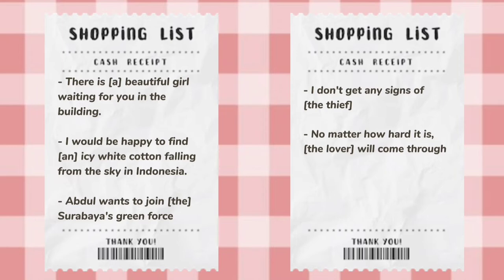Pembicara sudah tahu makna masing-masing pada frasa ini, seperti beautiful girl. Pembicara bisa saja mendeskripsikan beautiful girl dengan suatu nama, tapi alih-alih menyebut nama, si pembicara menggunakan ekspresi 'beautiful girl'. Selanjutnya, 'I see white cotton falling from the sky' — dalam makna ini yang dimaksud adalah salju. Dan yang terakhir adalah Surabaya's Green Force, atau yang kita sebut echo green atau penghijauan.